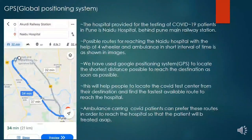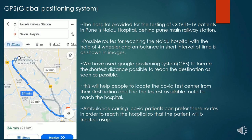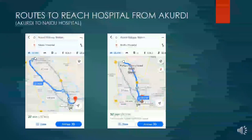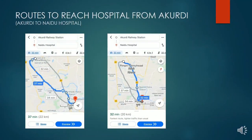Here we can see that one of all possible routes towards Naidu hospital has been displayed. We have used Google Positioning System to locate the shortest test journey time. This will help people to locate COVID test centers from their destination and find the fastest available route to reach their places. These are two images that show possible routes to Naidu hospital.